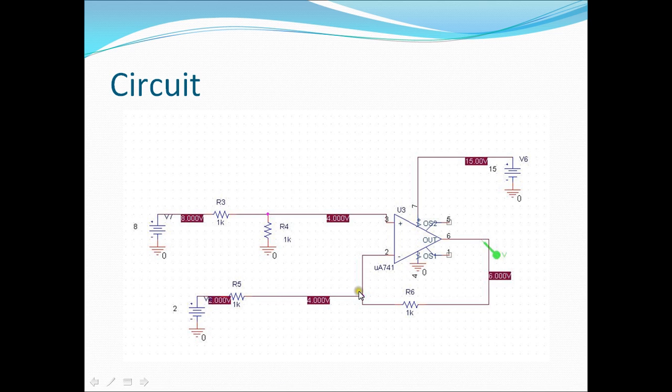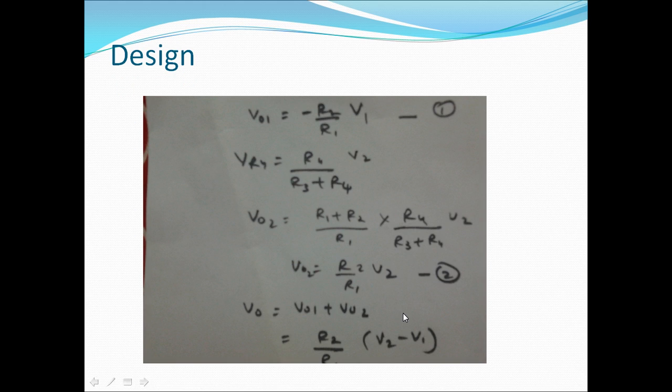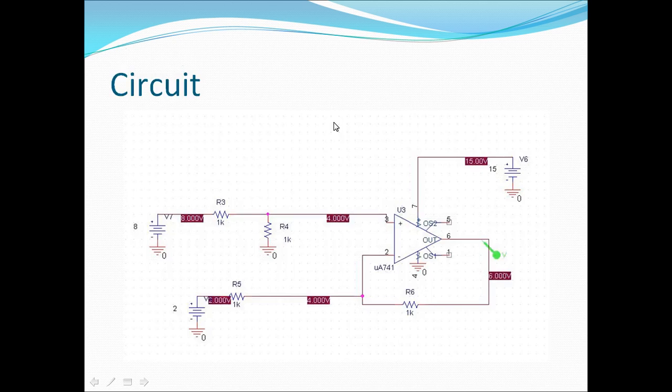And this acts as an inverting amplifier with a gain minus R6 upon R5 into V1. V1 is 2 volts. So here you can see this is 2 volts. So this is VO1, output just with the input at the inverting terminal if non-inverting terminal grounded.